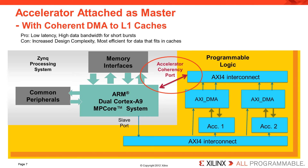Typical operation of the coprocessor occurs as follows. Once the data is ready for processing, the A9 processor signals the coprocessor via the slave port that it may begin processing the data. The communication may include the address of the data. The coprocessor initiates a DMA transfer from the memory — in this case the L1 cache — to its local buffer. The coprocessor processes the data and returns the results into a second buffer, then initiates a DMA transfer from the buffer back to the L1 cache. Finally, the coprocessor signals the A9 processor that the data processing has been completed, and the processor may then use the data.